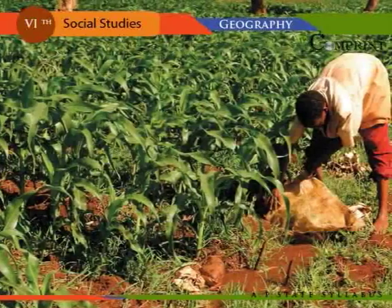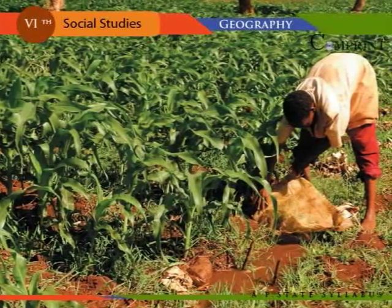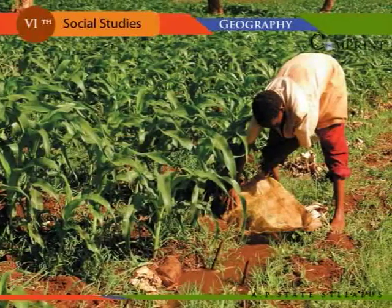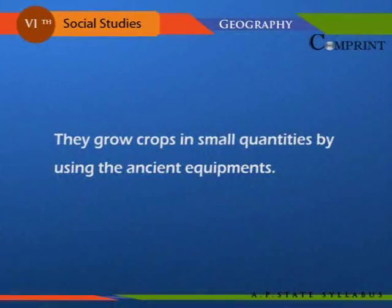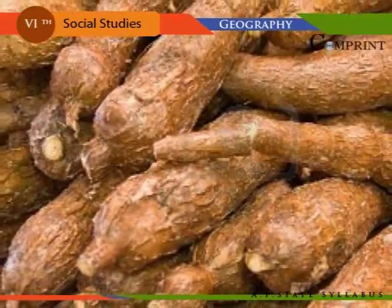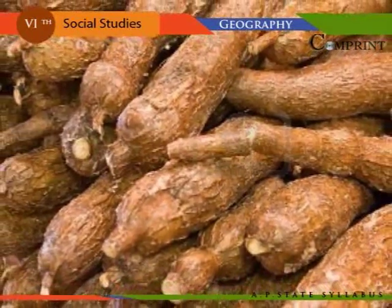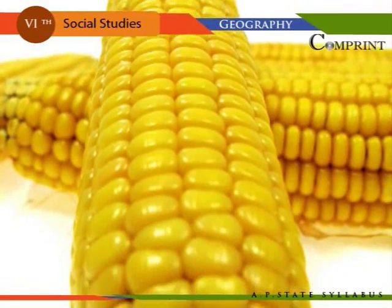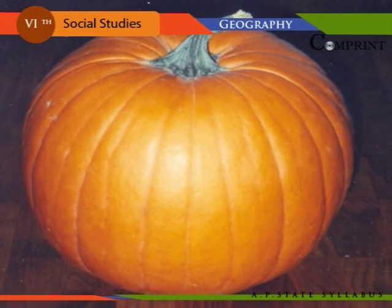On the grasslands, native African tribes practice shifting cultivation, also called zooming cultivation. They grow crops in small quantities using ancient equipment. The crops grown include cassava, sorghum, millets, corn, wheat, tubers, beans, pumpkin, etc.